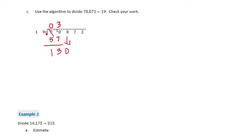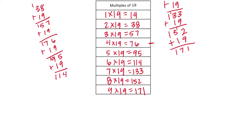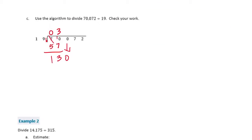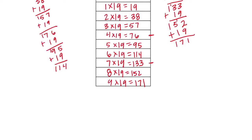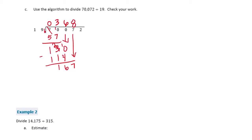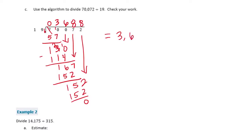Bring down the 0. So now we want to know how many times 19 can go into 130. So let's go back to our multiples chart. Well there's 133, so that's too many. So we can go in 6 times, which was 114. We subtract and get 16. Bring down the 7, so 167. See how many times 19 can go into 167. 171 is too big, so it can go in 8 times, which is 152. Bring down the 2, and 8 times was 152, so it can go in exactly 8 times. So our answer is 3,688.